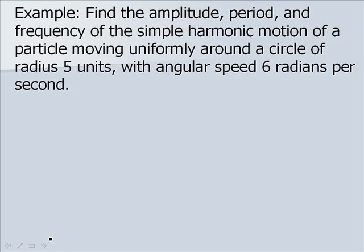In this example, we want to find the amplitude, period, and frequency of the simple harmonic motion of a particle moving uniformly around a circle of radius 5 units with angular speed 6 radians per second. Our radius is equal to our amplitude, which is equal to 5.